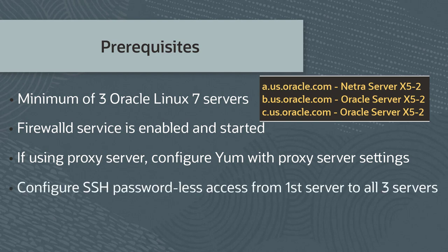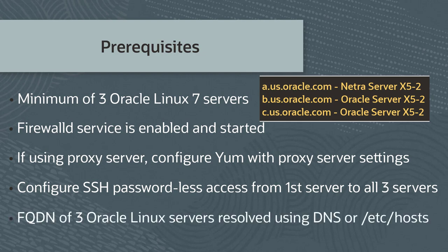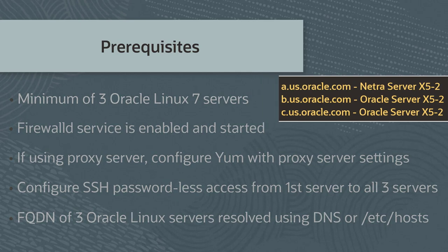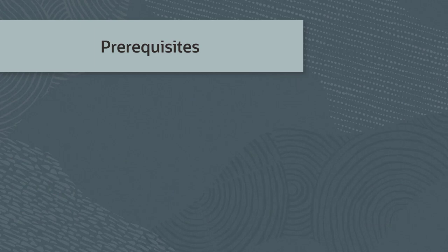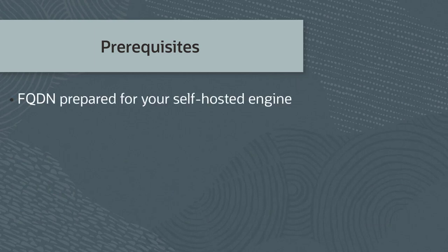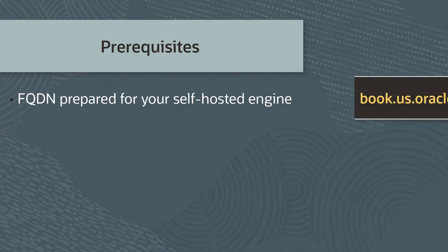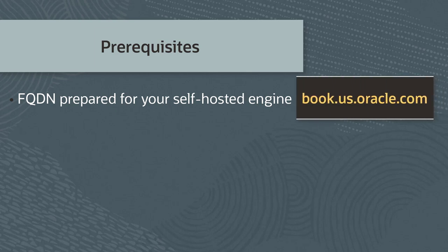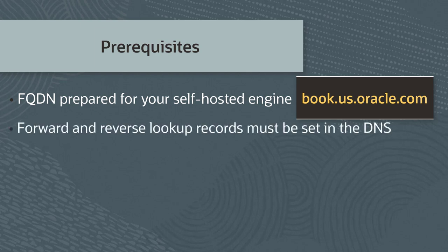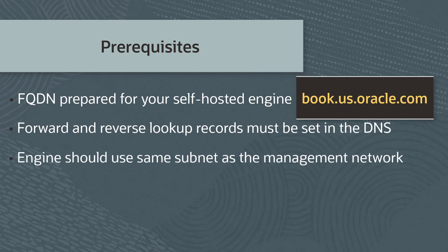You must have configured passwordless SSH between the first server to itself and to the other two servers. This is needed for Gluster deployment. The fully qualified domain names of the three Oracle Linux servers can be resolved using DNS or through the /etc/hosts file on the servers. You must have a fully qualified domain name prepared for your self-hosted engine. Forward and reverse lookup records must be set in the DNS, and the self-hosted engine should use the same subnet as the management network.